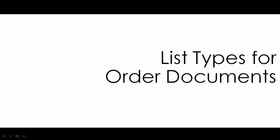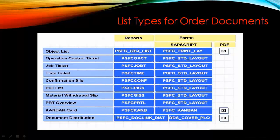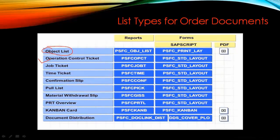List types for order documents: we have different types of tickets that can be printed depending on the operations. The object list is the main production order printout. Then we have the operation control ticket, which prints details for each operation. For example, if you have four operations in the routing and only the first is released, you can print out the first operation's details and give it to the operator. Later when the second operation is released, you print that one as well.